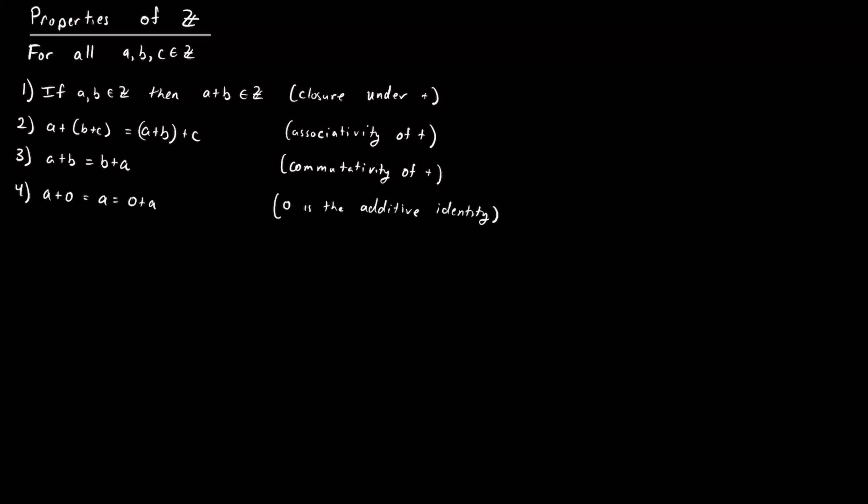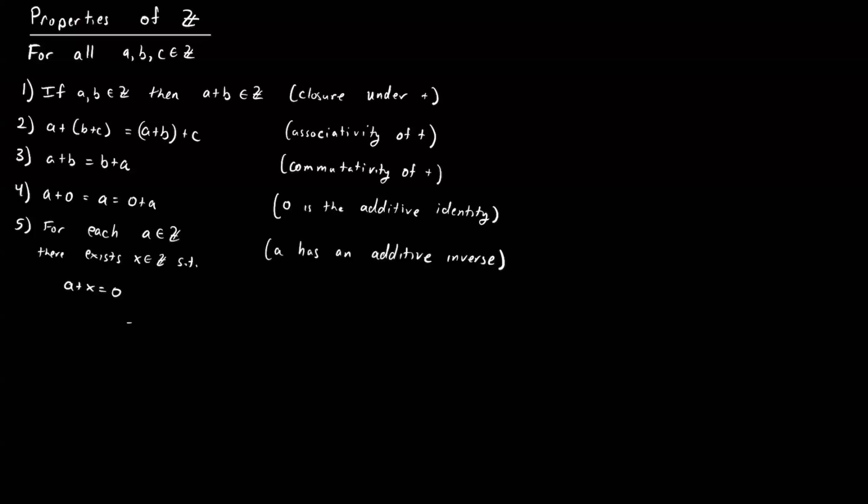Another property is that we have the special number zero. Zero satisfies the property that any integer plus zero is that same integer: a plus zero equals a, and zero plus a equals a. Finally, for every integer a, there's an integer we can add to it to get zero — we call this the additive inverse, and zero the additive identity. For example, three plus negative three is zero.